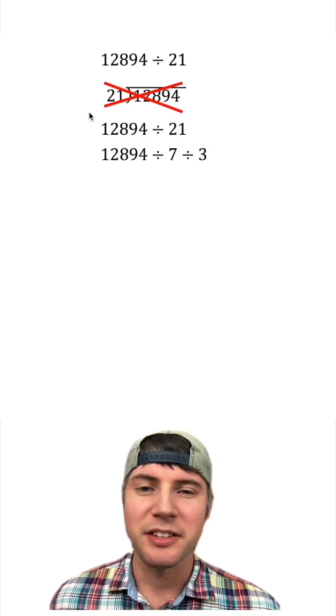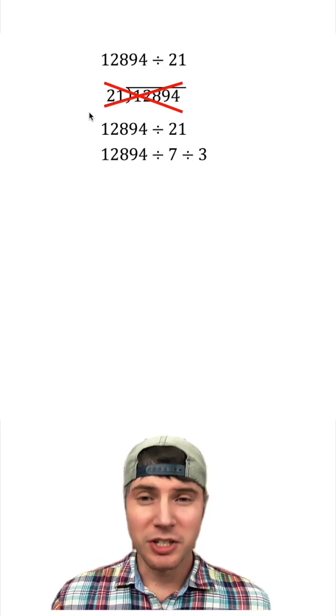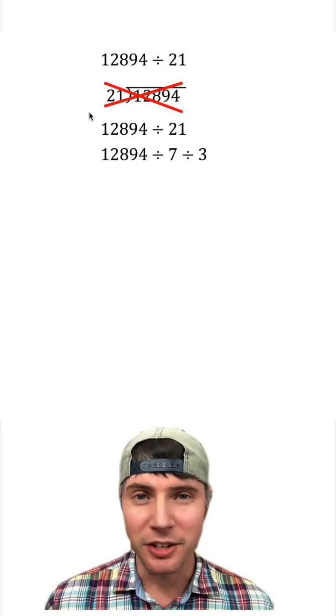Instead, another way to do this is to divide by 7 and then divide by 3. That's going to give you the exact same result. You just use the times tables for 7 and 3, which is a lot easier than 21.